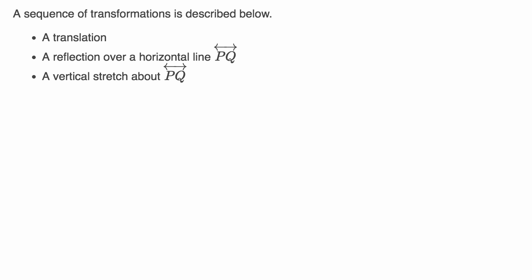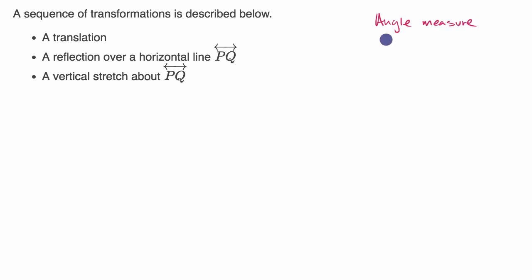In past videos, we've thought about whether segment lengths or angle measures are preserved with a transformation. What we're now going to think about is what is preserved with a sequence of transformations. In particular, we're going to think about angle measure and segment lengths when transforming some type of a shape.